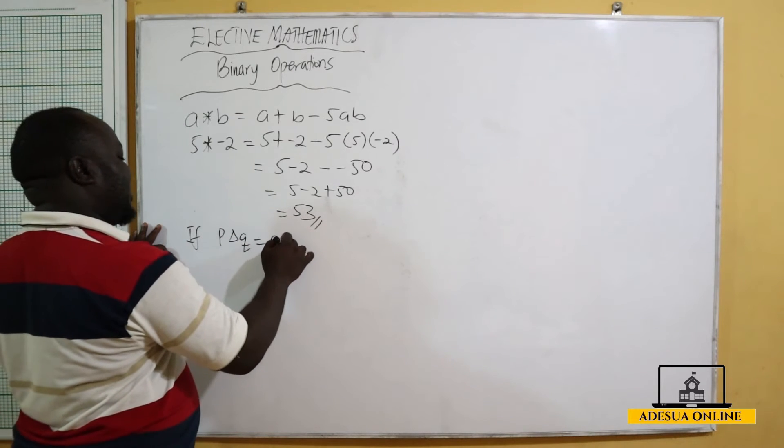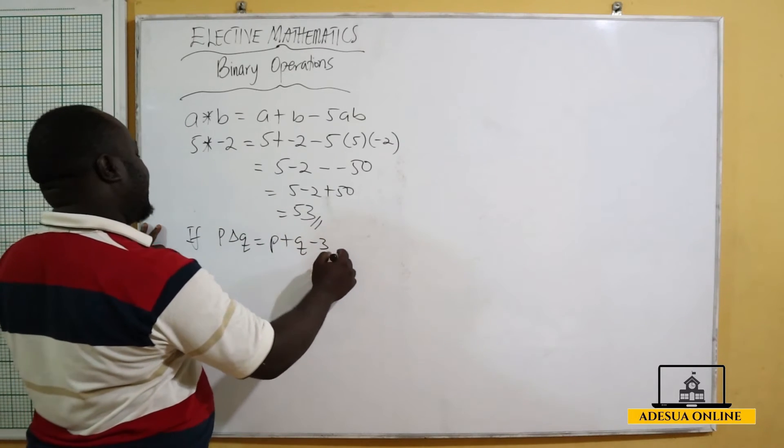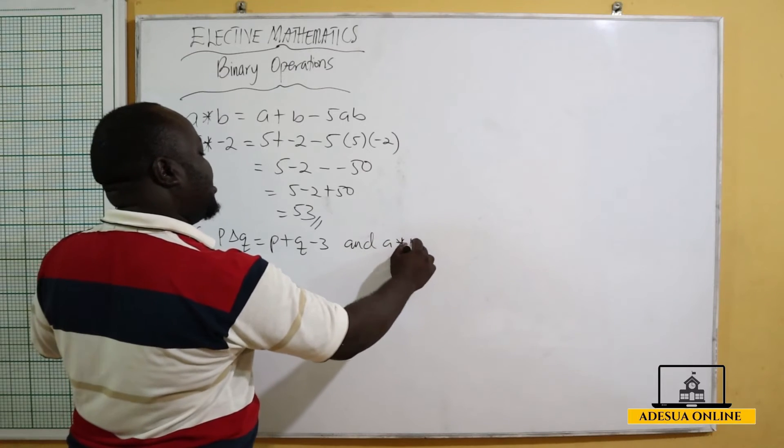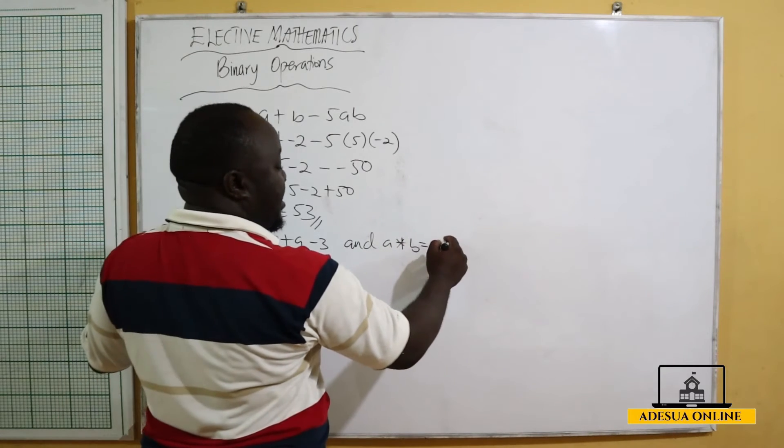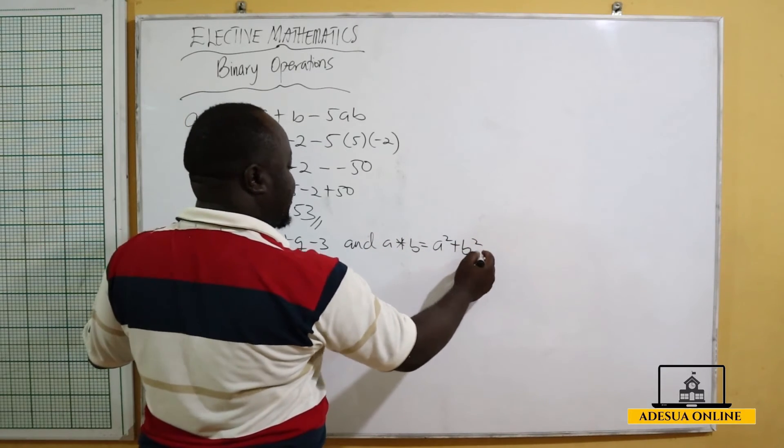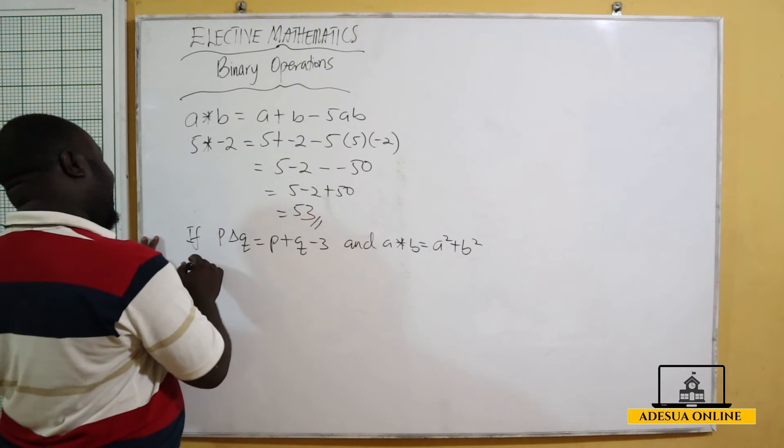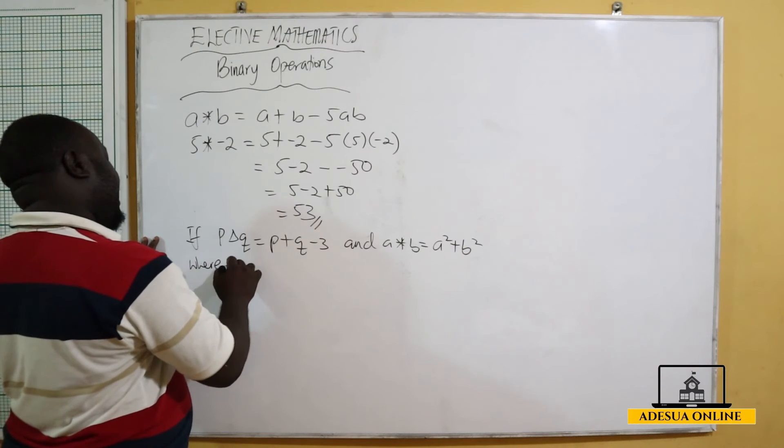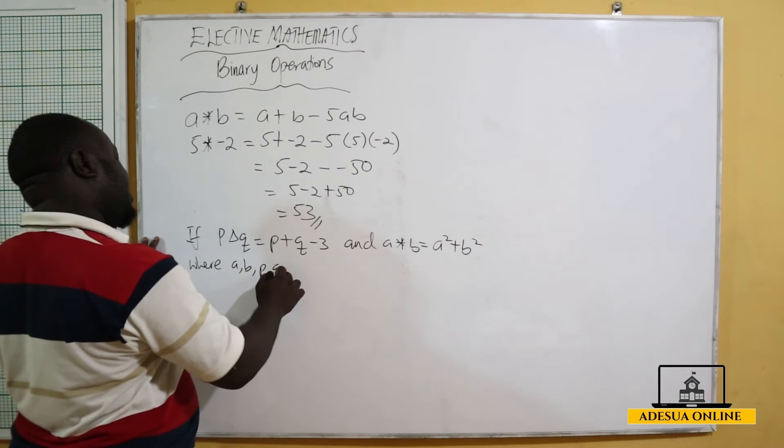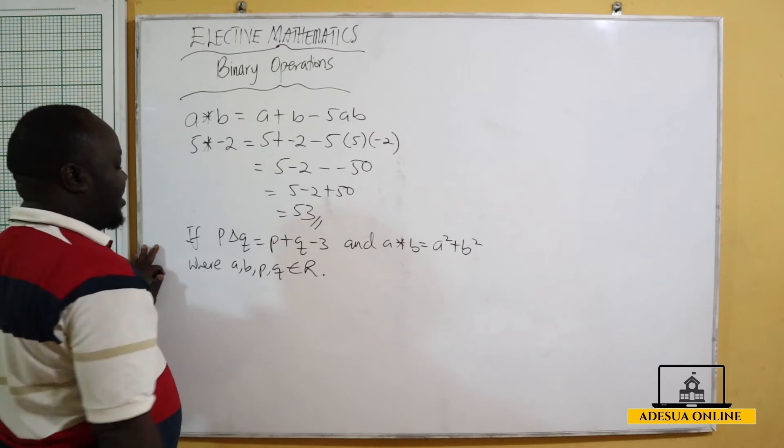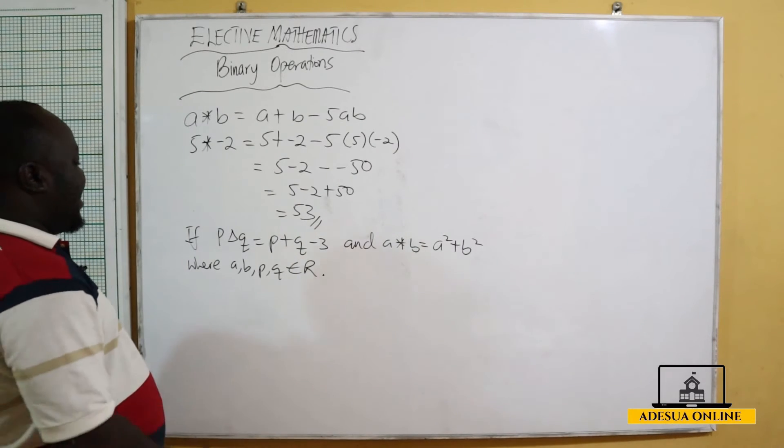...is equal to p plus q minus 3, and a operation b is equal to a squared plus b squared. Where a, b, p, and q belong to the set of real numbers, then I ask you to evaluate...